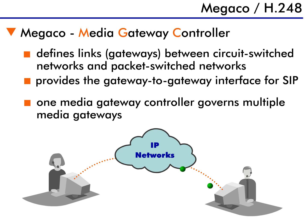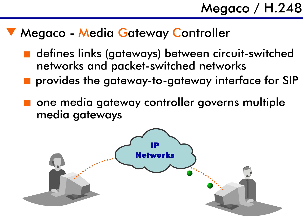MEGACO provides the gateway-to-gateway interface for SIP. Using SIP and MEGACO together allows media like fax, video, and data to flow from the public telephone network to IP networks and vice versa. Multiple media gateways are governed by one media gateway controller, so intelligence is centrally located, which makes it easier to implement MEGACO in an existing network.